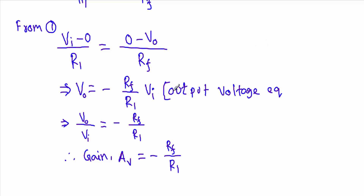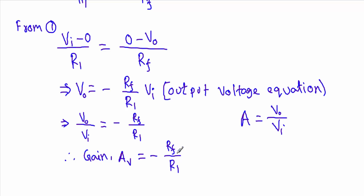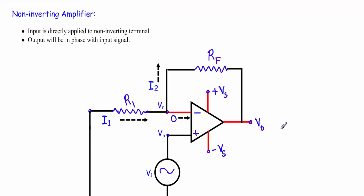Vo is the output voltage of the inverting amplifier. We know that gain equals output voltage divided by input voltage, so taking the ratio gives: Vo / Vi = −Rf / R1. Therefore, the gain of this inverting amplifier is −Rf / R1. The minus sign signifies that the output voltage will be 180 degrees out of phase with respect to the input voltage.